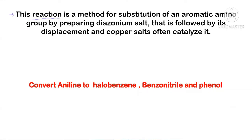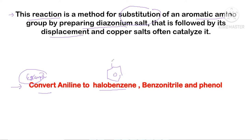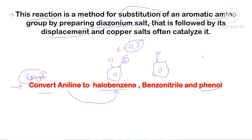The Sandmeyer reaction is a method for the substitution of an aromatic amino group by preparing the diazonium salt, followed by its displacement, catalyzed by a copper salt. Now let's discuss some examples. The question is: can we convert aniline to halobenzene such as chlorobenzene or iodobenzene, and also to benzonitrile — where CN is attached to the benzene ring — and to phenol, where an OH group is attached to the benzene ring?